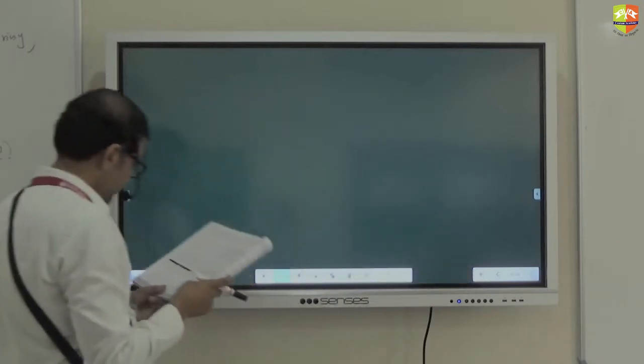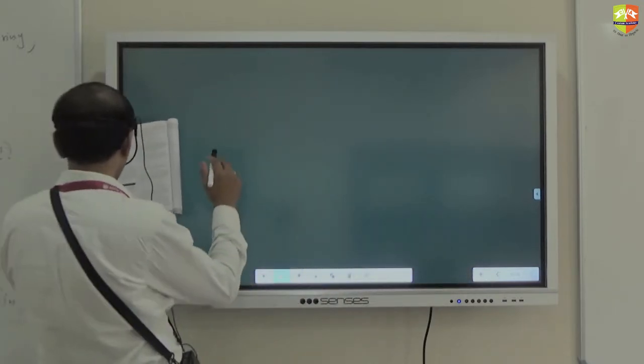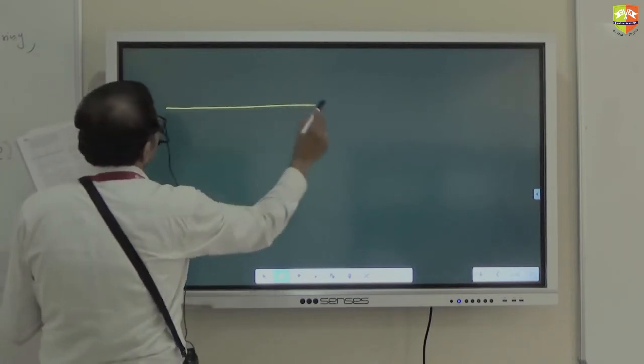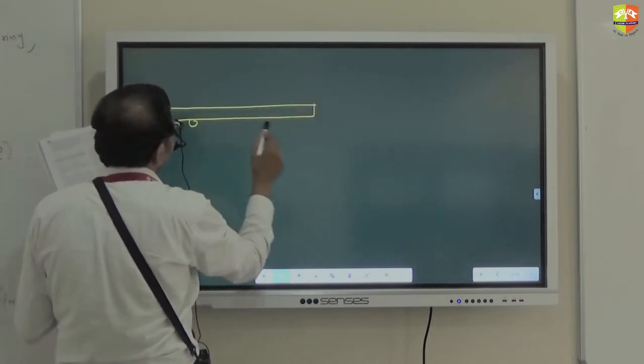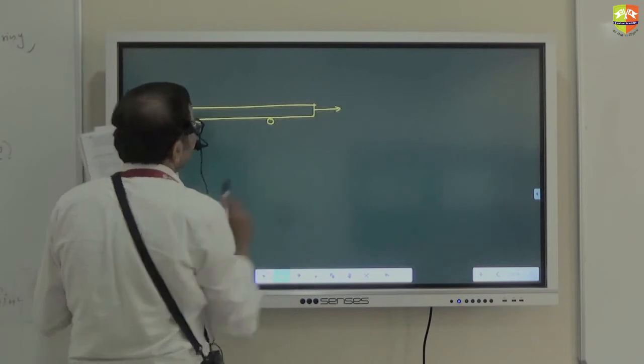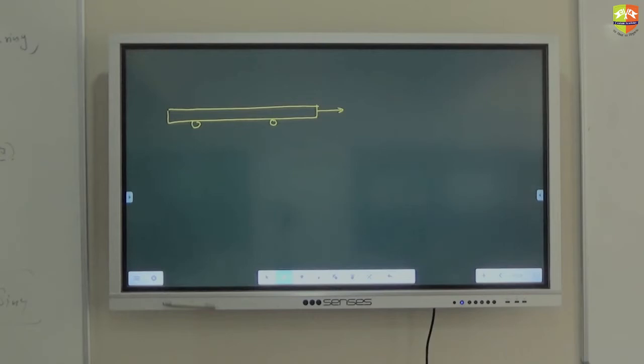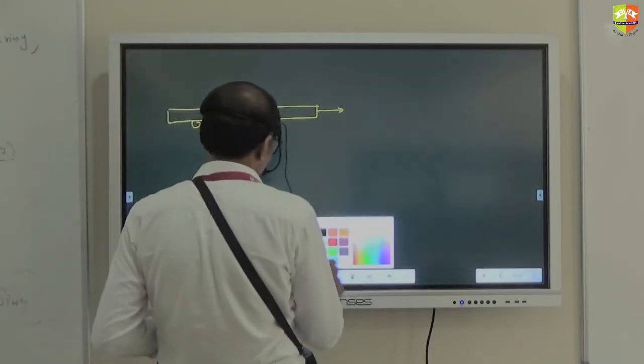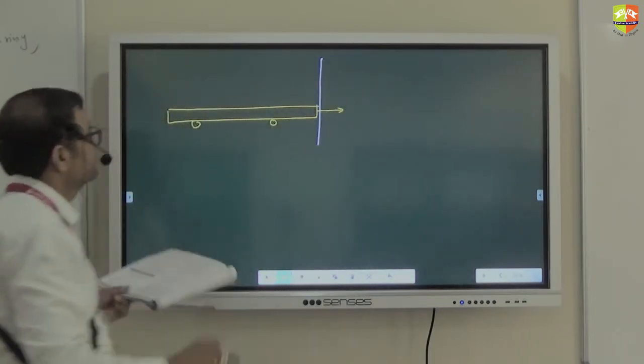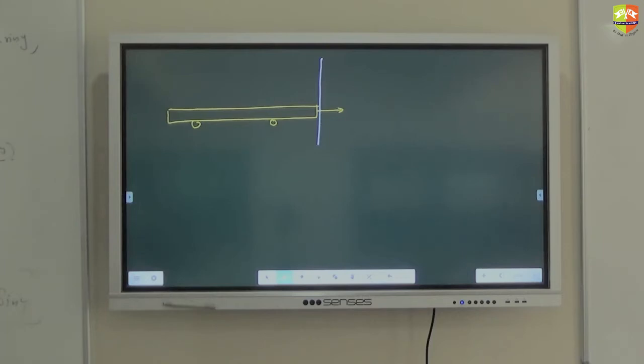Okay. Next question. All of you, do this. A good train accelerating uniformly on a straight railway track. This is train. This is train. Okay. Approaches an electric pole standing on the side of the track. So if this is a pole, train is going in a straight line and there is a pole, that's it. Right now, this is the story.